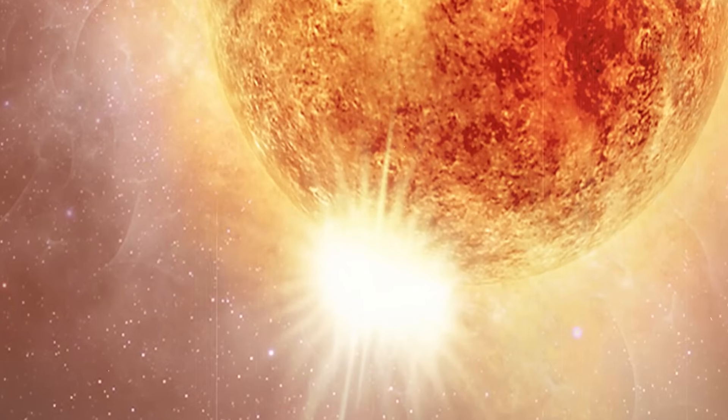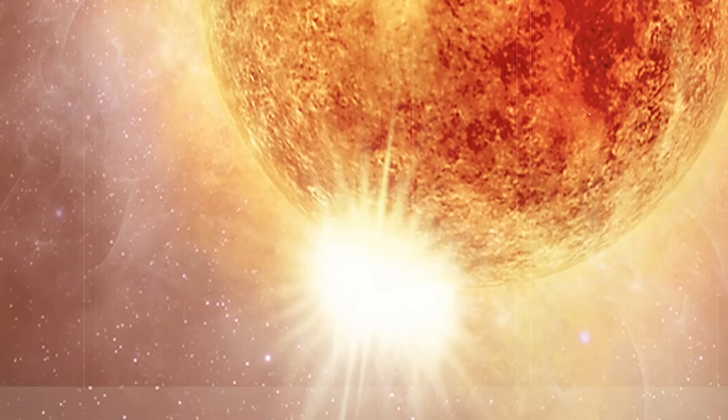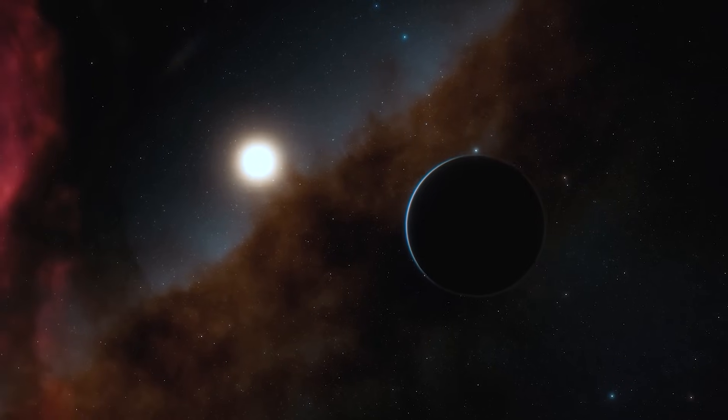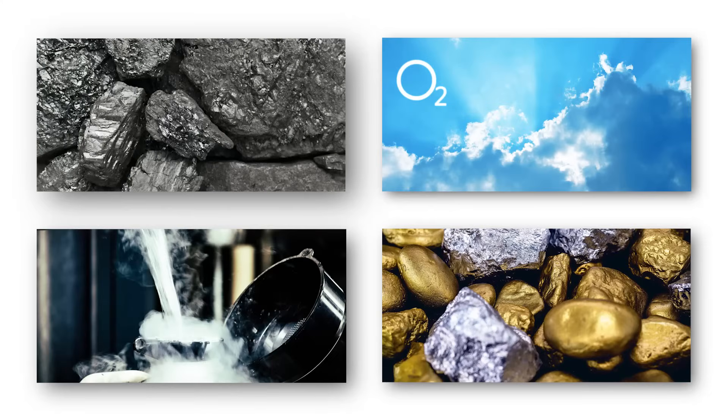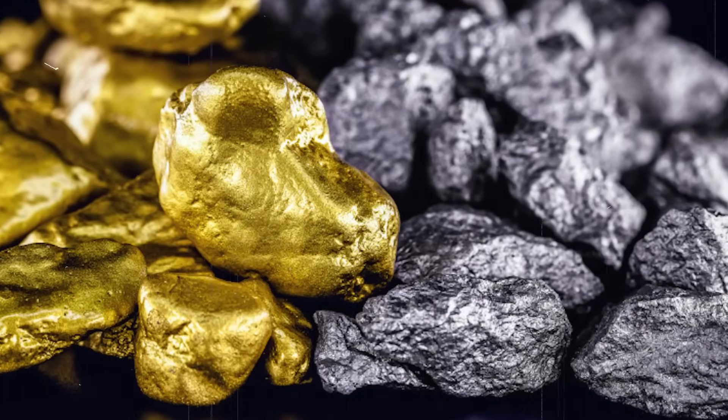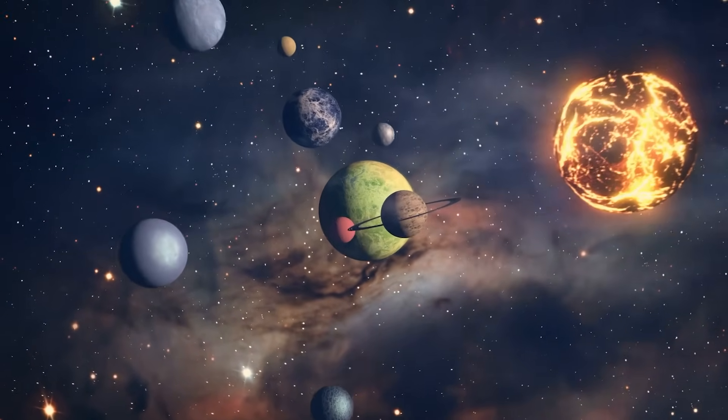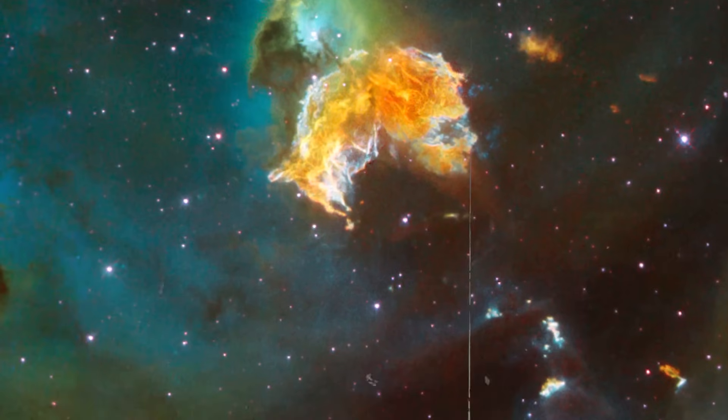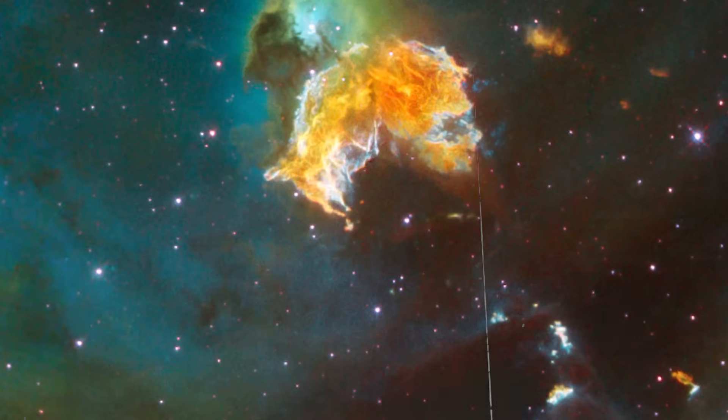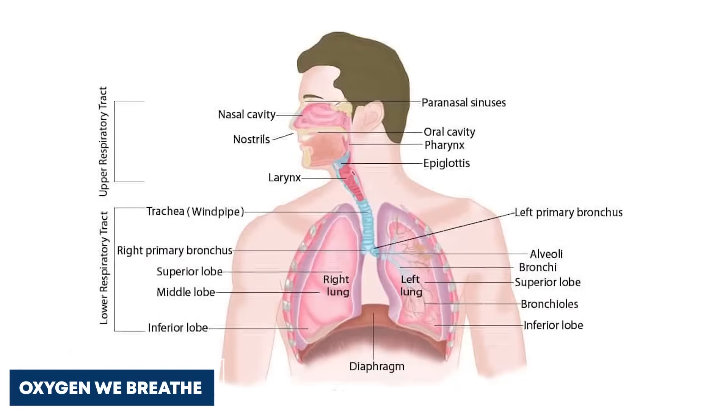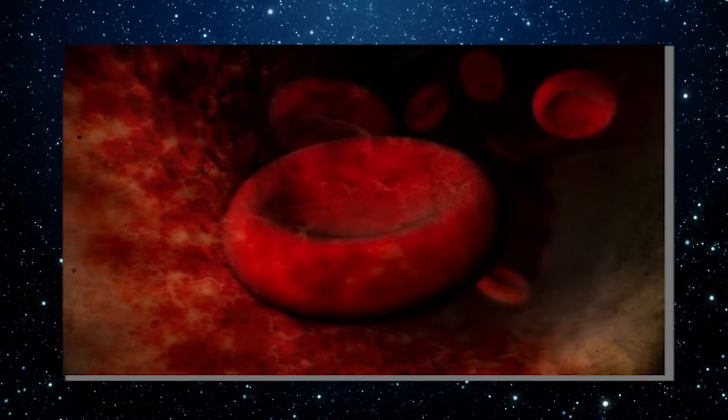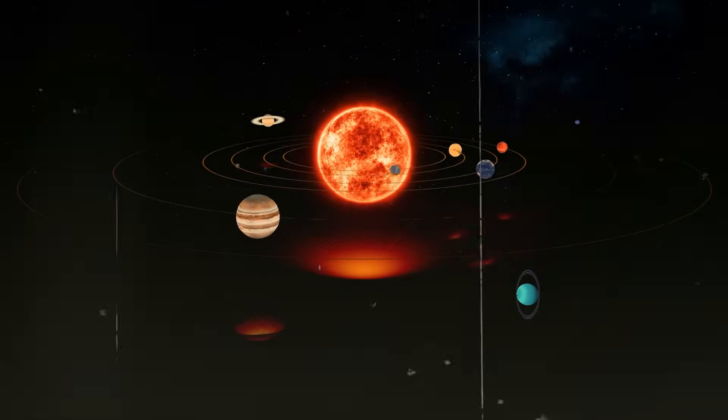But the impact of Betelgeuse's explosion goes beyond the immediate surroundings. When the star explodes, it scatters heavy elements like carbon, oxygen, nitrogen, and precious metals such as gold and platinum into space. These elements become the building blocks for future stars, planets, and potentially even life. In a literal sense, our existence owes its existence to the death of stars like Betelgeuse. The carbon in our cells, the oxygen we breathe, and the iron in our blood were all synthesized in the hearts of stars that exploded long before our solar system came into existence.